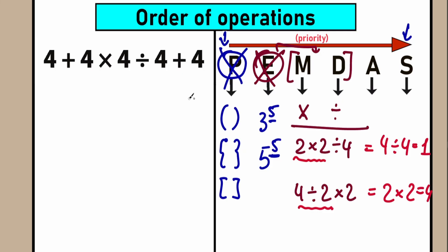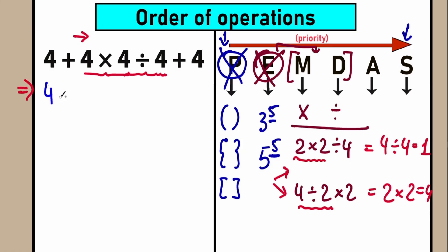Now let's scan our question for multiplication and division signs. We have a multiplication sign here, applied to these two fours. The next thing is division. This is exactly our case — we have a multiplication-division mixture. We need to perform it in strict order from left to right. The first sign from left to right is multiplication, so we need to multiply 4 times 4 first. Let's put imaginary brackets around that: 4 times 4 equals 16.